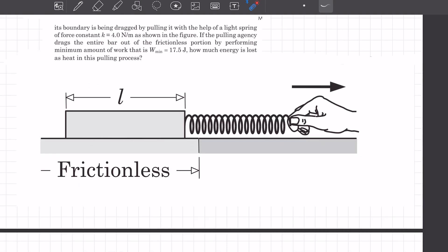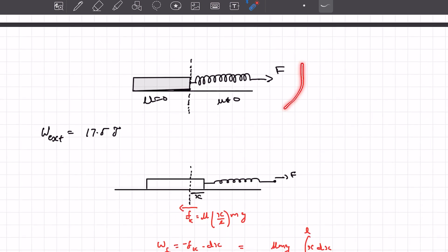So let's begin with the solution. This is how the situation of the problem looks like. So let's say after a while, after some time, x length of the rod is on the right side.